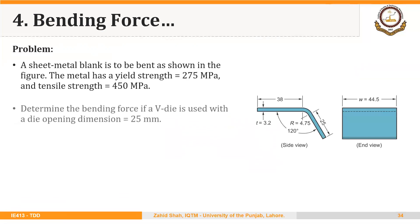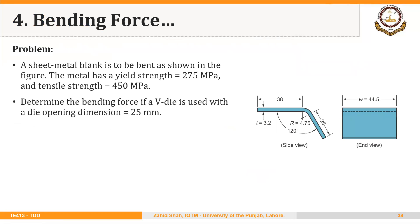Let's solve a simple example. A sheet metal blank is to be bent as shown in the figure. This is the final part that we have to make. The metal has a yield strength of 275 MPa and tensile strength of 450 MPa. Determine the bending force if a V-die is used with die opening of 25 mm.